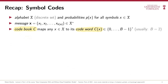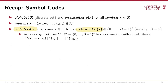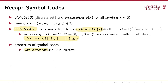Once we have such a codebook, we define a symbol code C* that maps entire messages to bitstrings by simply concatenating the codewords for the symbols that make up the message. More precisely, C* doesn't introduce any delimiters between codewords, and we already saw that this can lead to ambiguities if we're not careful. So we restrict our discussion to symbol codes where C* doesn't have any ambiguities, and we call such symbol codes uniquely decodable.